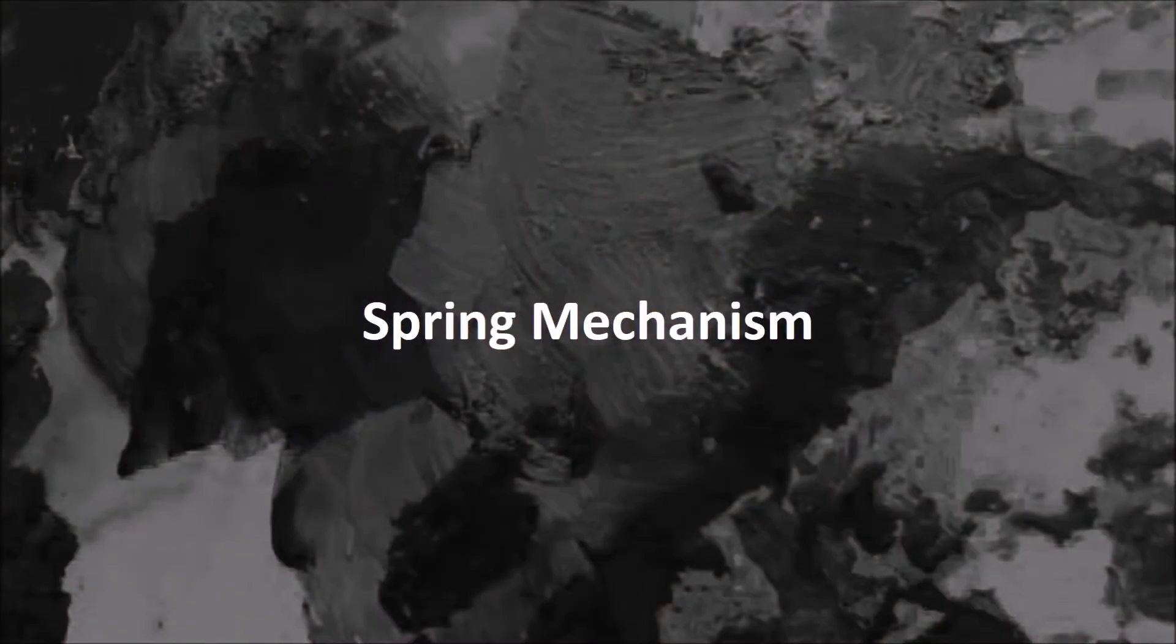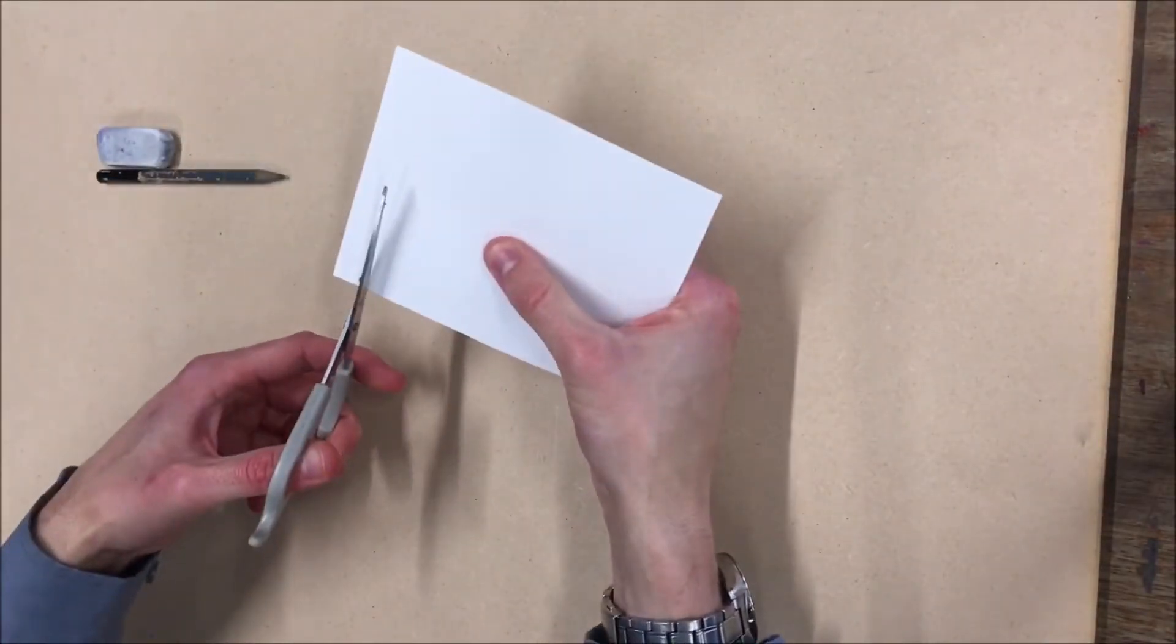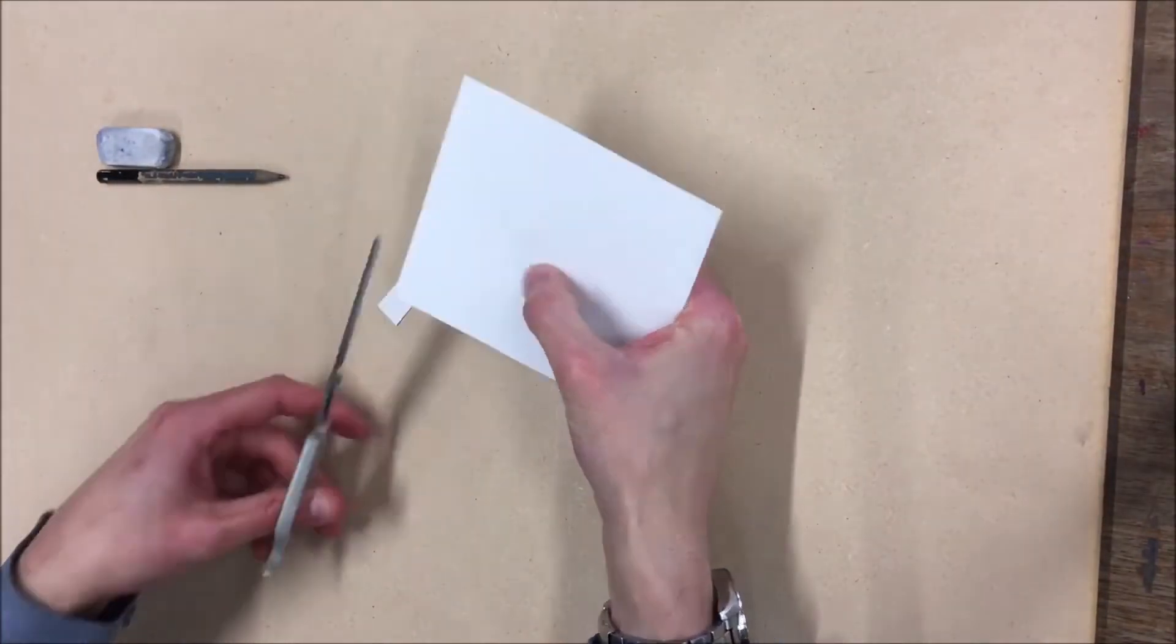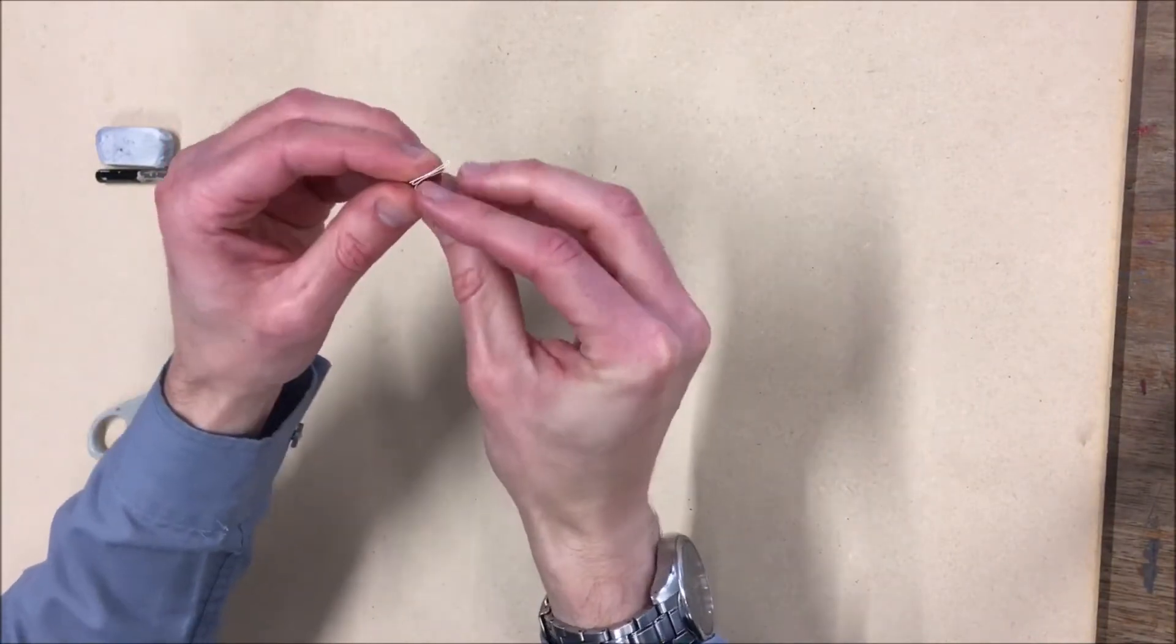Spring Mechanism. For this one, take a piece of paper, cut a strip of about one centimeter wide and fold it back on itself several times.